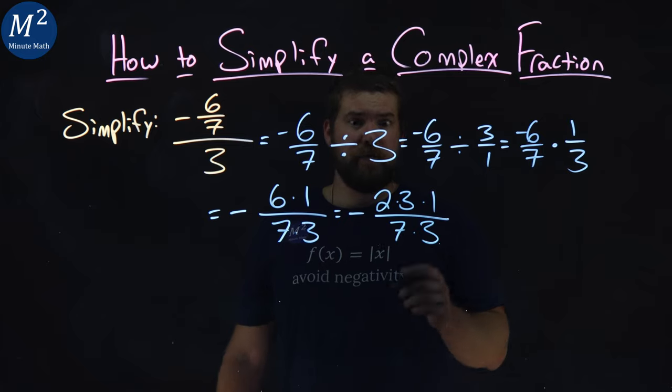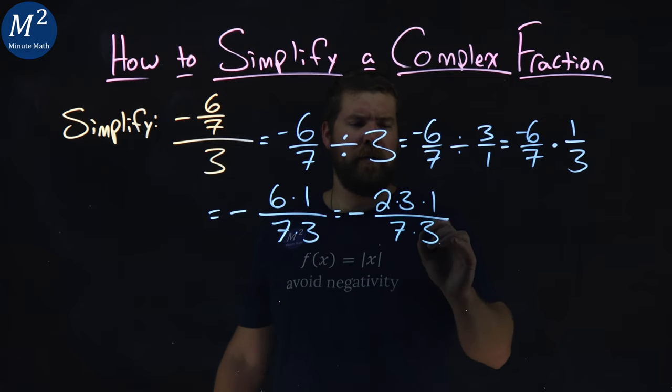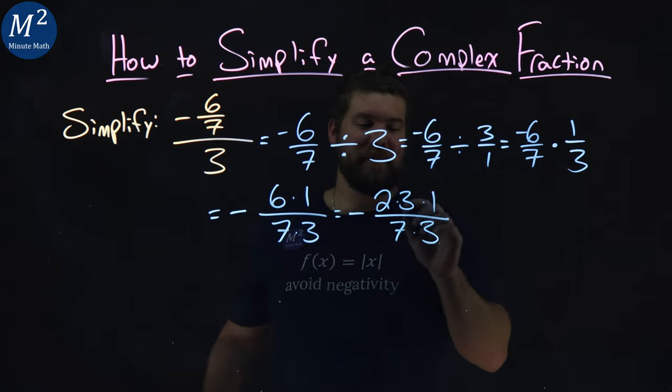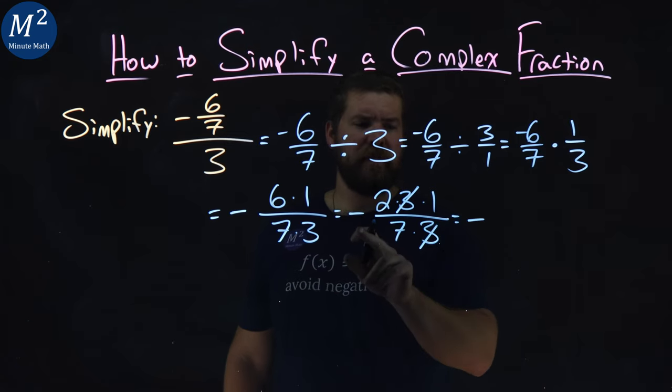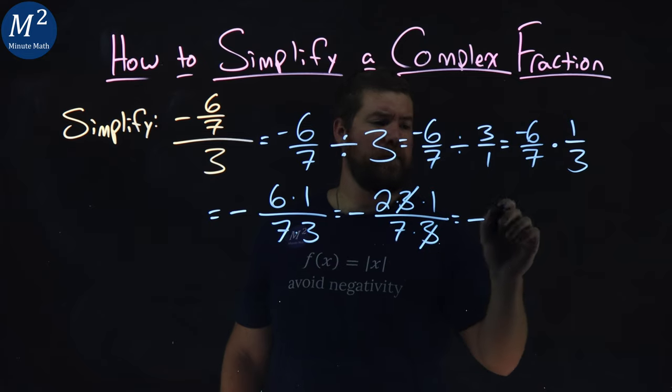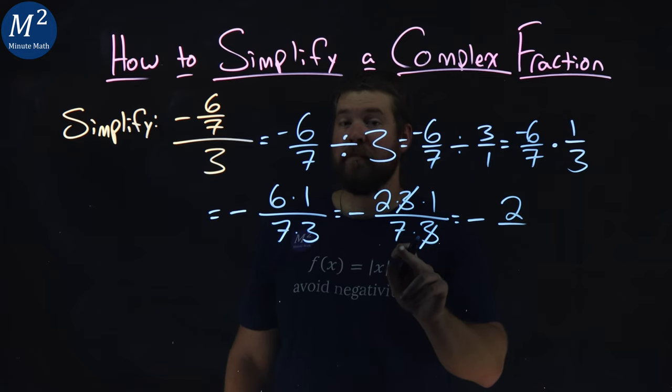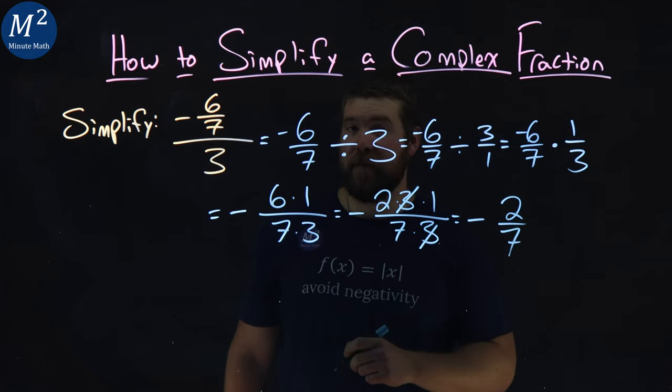Let's cross off like terms here. Three, three. Same numbers. Three in the numerator, three in the denominator. Now we simplify. Negative still. Two times one is two, and seven by itself is seven.